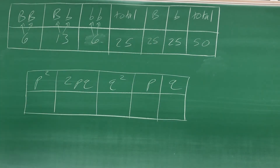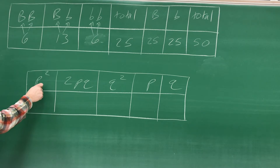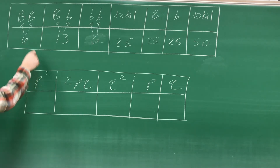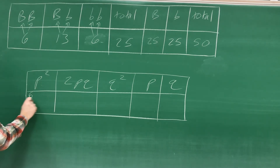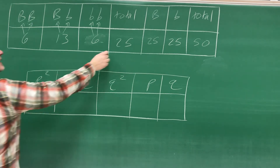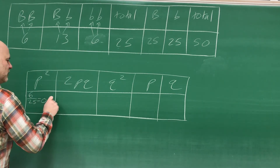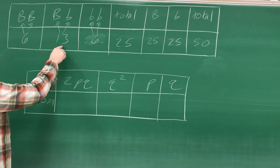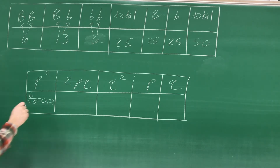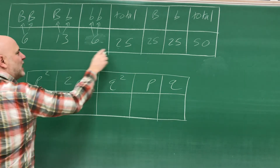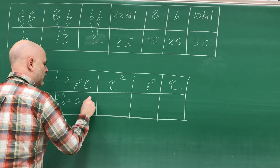Now to determine p², 2pq, q², p, and q — remember, p² is the frequency of the homozygous dominant individuals. To figure out what p² is, we take six and divide that by 25, because that's the total number of individuals. Six divided by 25 equals 0.24. And 2pq is the frequency of the heterozygous individuals in the population. So take 13 and divide it by the total number of individuals, which is 25 — 13 divided by 25 equals 0.52.